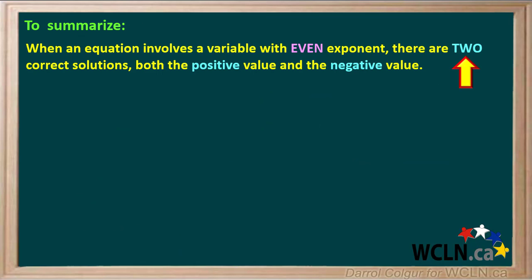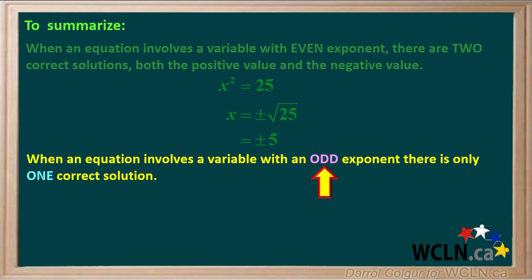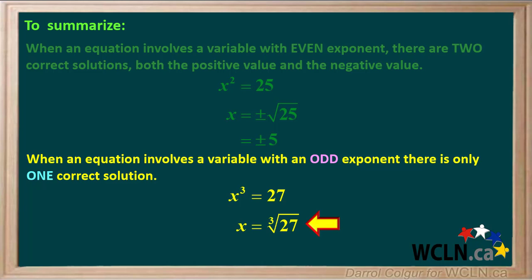To summarize: when an equation involves a variable with an even exponent, there are two correct solutions — both the positive and negative value. For example, if x squared equals 25, then x equals positive or negative 5. However, when an equation involves a variable with an odd exponent, there is only one correct solution. For example, if x cubed equals 27, there is only one value for the cube root — no positive or negative sign — and x equals the cube root of 27, which is positive 3.